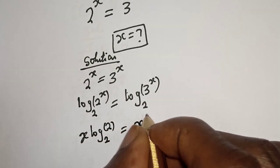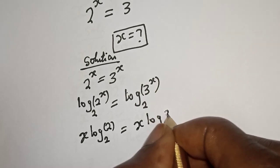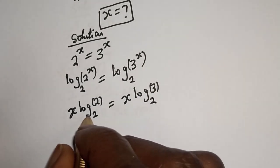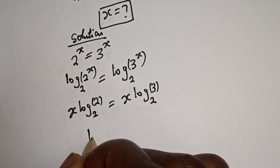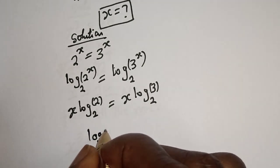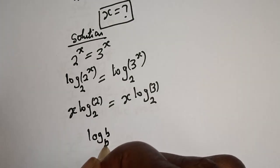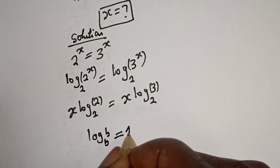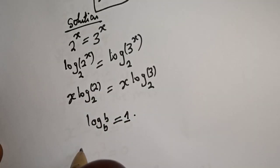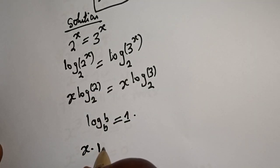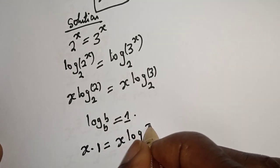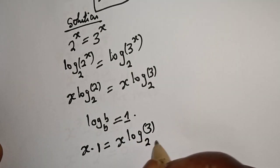is equal to s log 3 base 2. Now from the law of logarithm, if you have log B base B, this is equal to 1. So s multiplied by 1 is equal to s log 3 base 2.